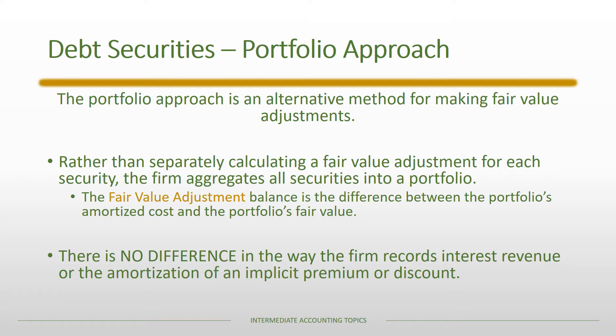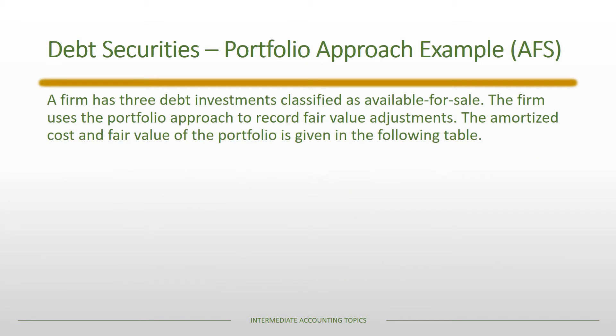The big idea is you aggregate the fair value and the amortized cost of all your securities into one portfolio, instead of comparing the fair value and amortized cost of each security individually. The fair value adjustment balance ends up being the difference between the portfolio's amortized cost and the portfolio's fair value — there is no individual security fair value adjustment account. It's also important that there is no difference in the way the firm records interest revenue or amortization of a premium or discount just because they use the portfolio approach.